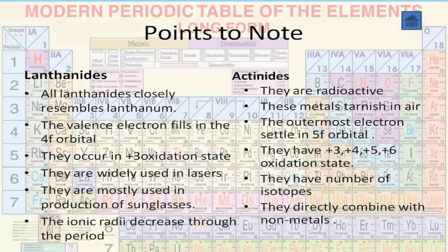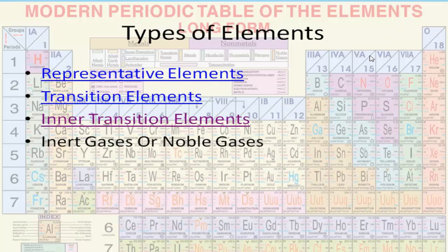To conclude, transition elements are heavy metals with high melting and boiling points, they show variable valencies, and they form colored ions due to different ionization energies and oxidation states. The actinoid series elements have a radioactive nature. That concludes the inner transition elements topic. In the next session, we shall discuss the inert gases or noble gases. Thank you.